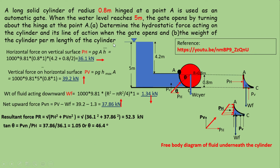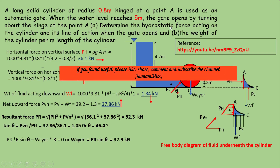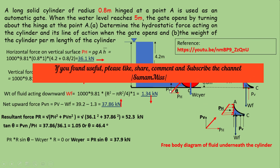The next step is calculating the weight of the cylinder per meter length. When the water level reaches 5 meters, the gate is about to open, so the reaction force at the bottom equals zero. Taking moments about A at the hinge and equating to zero: PR · r · sin θ − W · r = 0, giving weight of cylinder = 37.9 kN, which equals the net upward hydrostatic force.